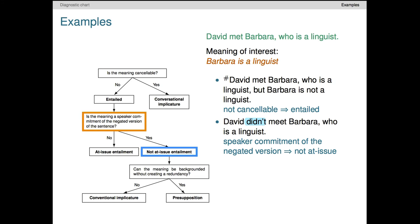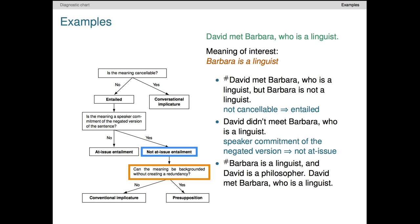All that's left is to experiment with backgrounding. Here I've done that by directly expressing the appositive content as a freestanding sentence, and the overall result sounds extremely redundant. So this meaning is not something the speaker is taking for granted. When the appositive is used, the content is supposed to be new. That leads us to a conventional implicature diagnosis for this appositive content, and once again, our work is done.